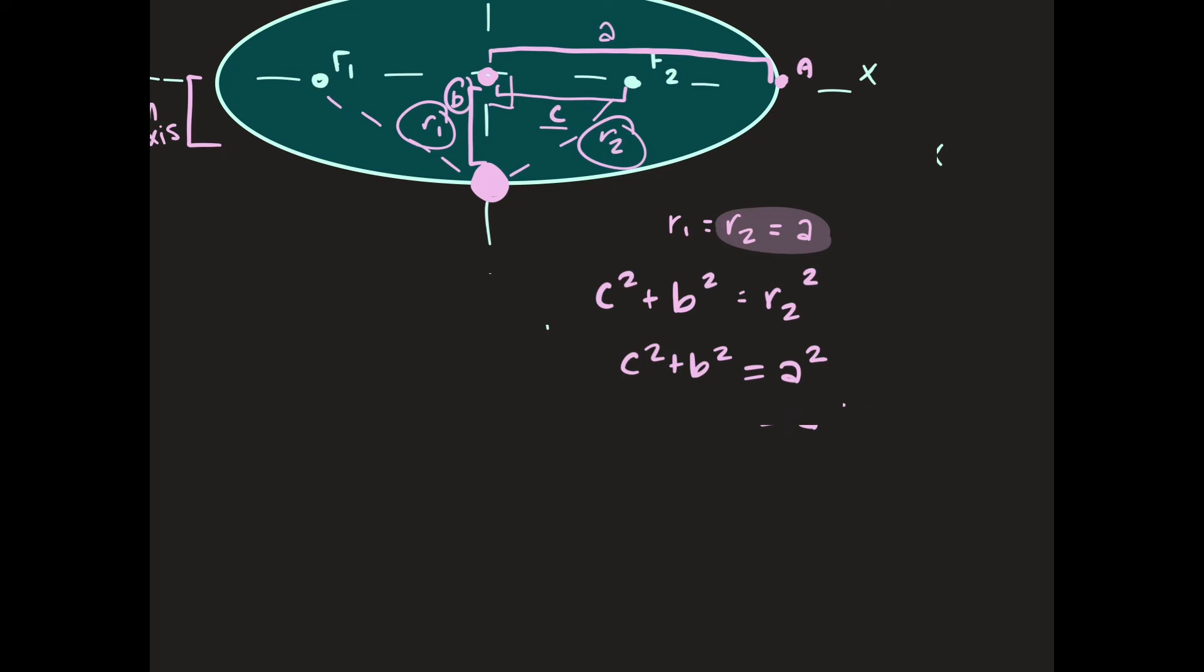We have c squared plus b squared equals a squared. This is essentially the Pythagorean theorem but variables are rearranged. So now is a great time to bring in something called eccentricity which will explain why this equation is so important.